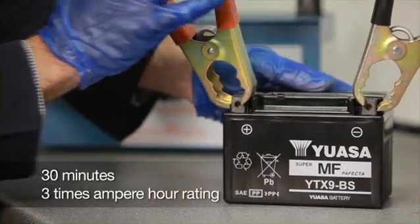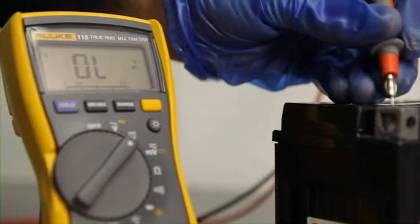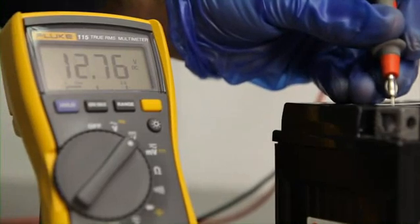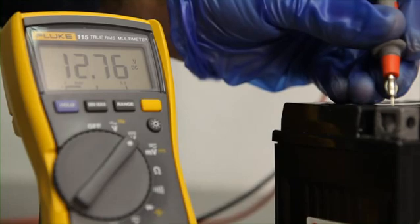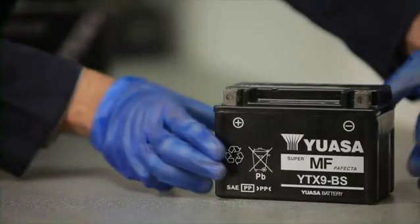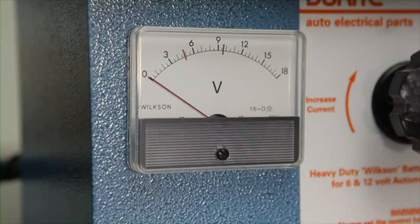Check the voltage. This should be a minimum of 12.6 volts on a 12 volt battery. The battery is then ready to be fitted. If the voltage is less than 12.6 volts or the battery fails the automatic battery test, repeat the charging cycle.